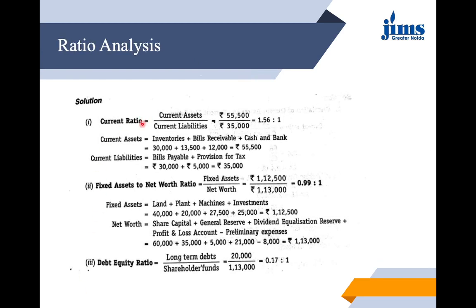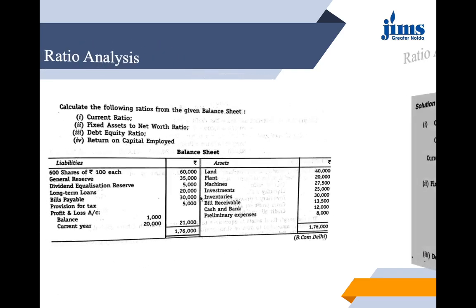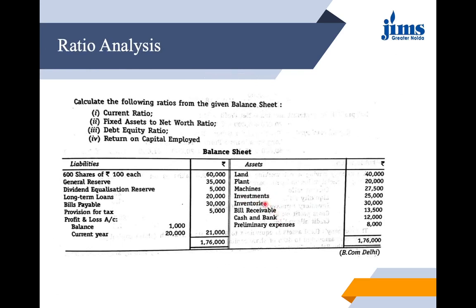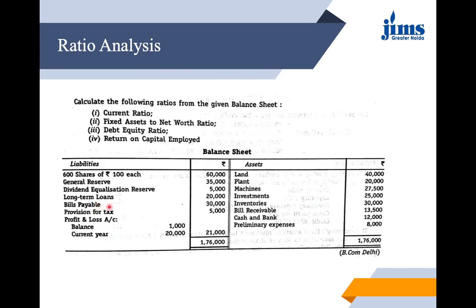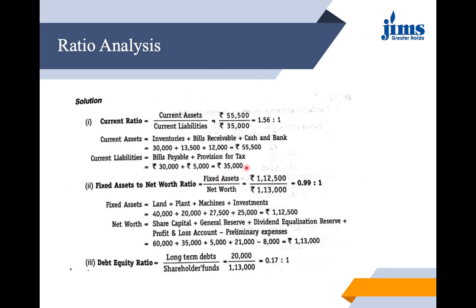First, current ratio = current assets / current liabilities. The current assets in this question are only three: inventories, bills receivable, and cash and bank, totalling ₹55,500. Current liabilities are only two: bills payable and provision for tax, totalling ₹35,000. So current ratio = 55,500 / 35,000 = 1.56:1. The ideal ratio is 2:1, so while not ideal, we are in a safe zone.